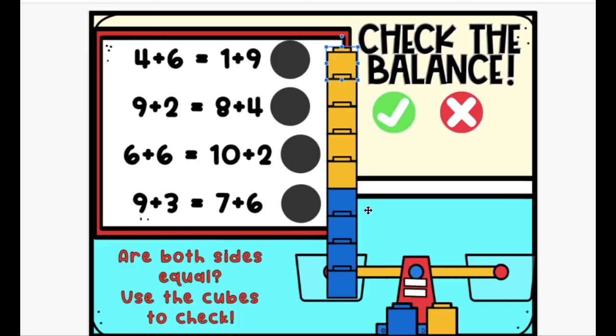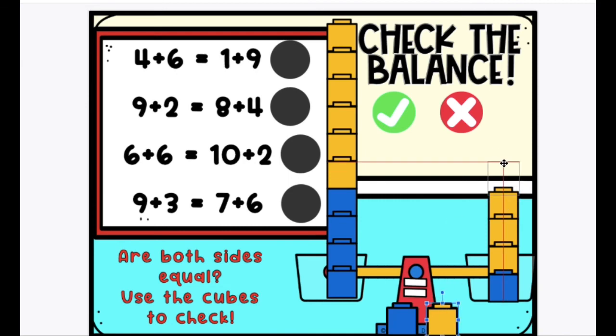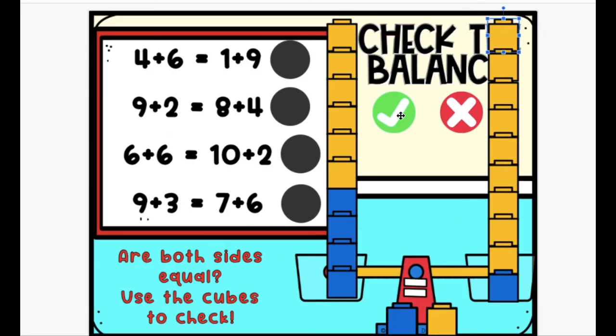1, 2, 3, 4, 5, and 6. And then 1 plus 9. 1, 2, 3, 4, 5, 6, 7, 8. One more. It's a balance. Yay. You are going to go through each one to check the balance.